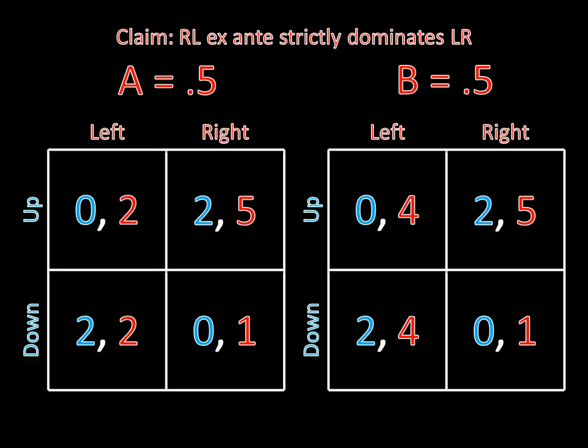Let's look at why this is the case, starting with the dominated strategy: left-right. Here the A type plays left and the B type plays right. Under these circumstances, the A type receives a guaranteed payoff of two. The B type, depending on player one's strategy, receives some convex combination of five and one — a mixture between those two values, somewhere between five and one.